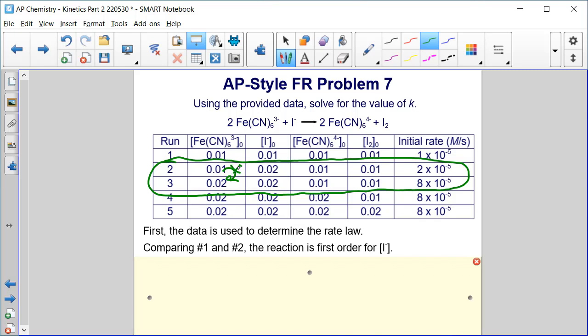If we double that concentration, the rate multiplies by four. We would call that second order for Fe(CN)6^3-.